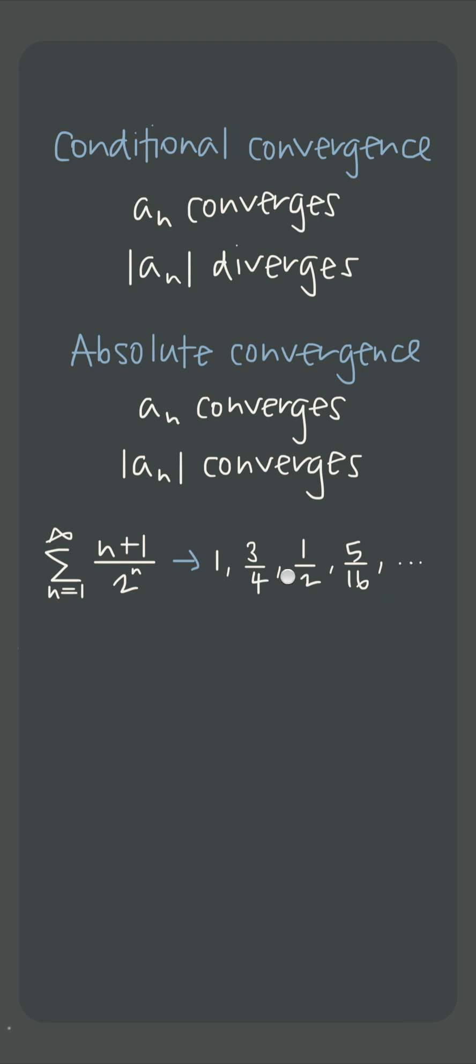Since all the terms in the series are positive, taking the absolute value of the series won't change any of its terms, which means there's no difference between the series and its absolute value, so both converge and the series converges absolutely.